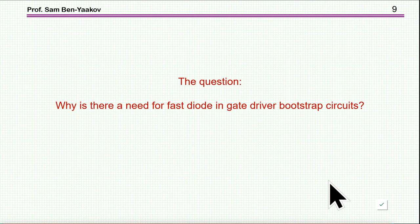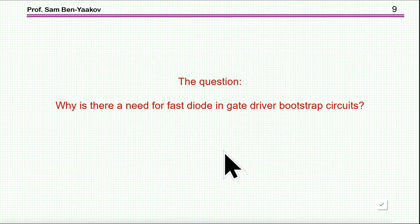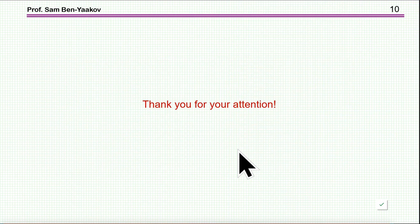So I'm going back to the question of this riddle: why is there a need for a fast diode in a gate driver bootstrap circuit? I'll be happy to get answers in the comment section of this YouTube video, and I'll try to answer them. In due time I'll post an answer which also covers the whole issue of designing a bootstrap circuit for a high side drive. Thank you very much for your attention.